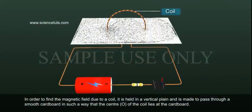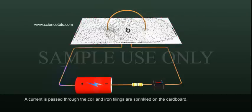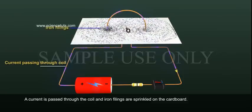it is held in a vertical plane and is made to pass through a smooth cardboard in such a way that the center O of the coil lies at the cardboard. A current is passed through the coil and iron filings are sprinkled on the cardboard.